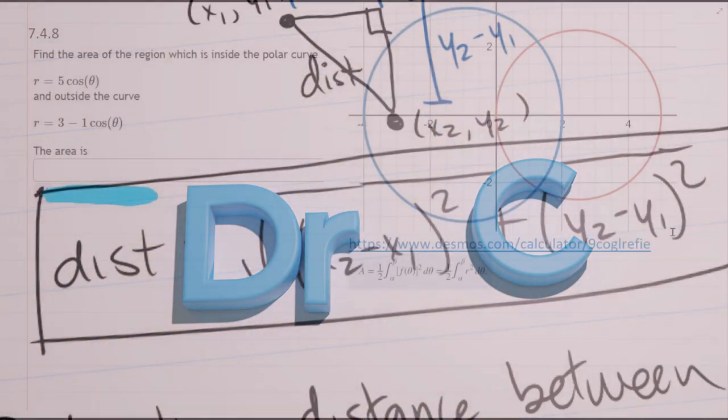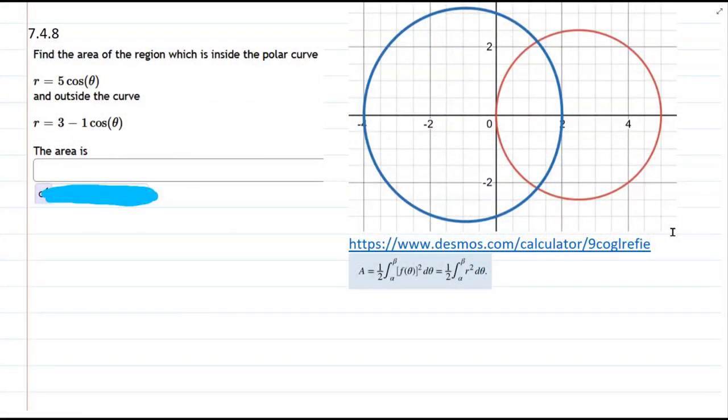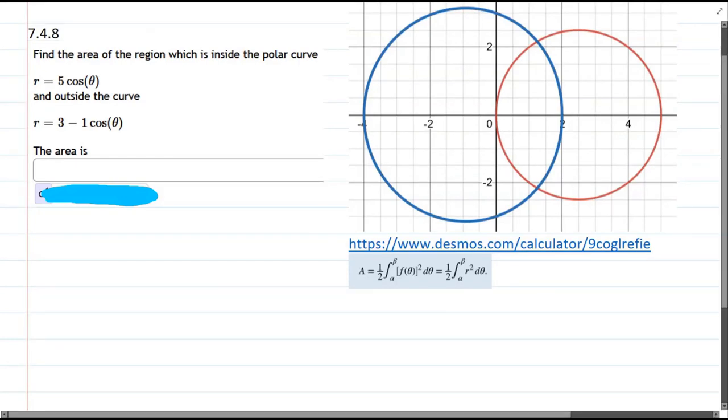We have to find the area between two curves. They've told us it's inside the first polar curve. So it's inside this one and outside that one.